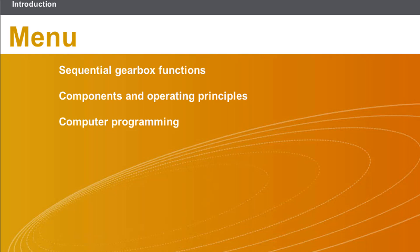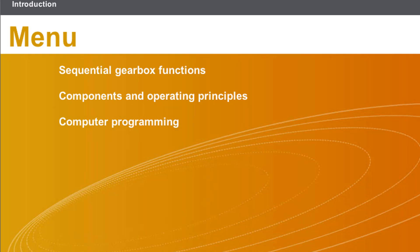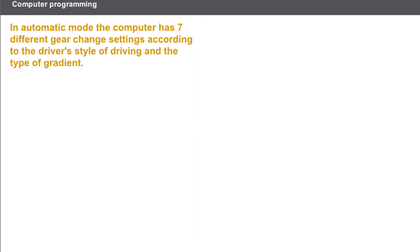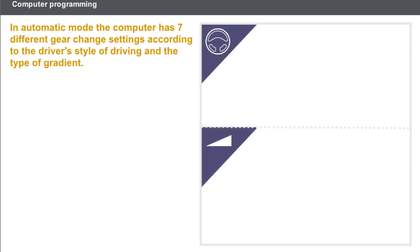This lesson will cover the following topics: computer programming. In automatic mode, the computer has seven different gear change settings according to the driver's style of driving and the type of gradient. The gear change speed settings based on driving style are as follows.